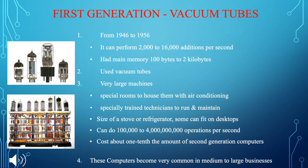Now I want to talk about vacuum tubes, which represent the first generation of computers. The vacuum tube era is from 1946 to 1956. It can perform 2,000 to 16,000 additions per second and had a main memory from 100 bytes to 2 kilobytes.